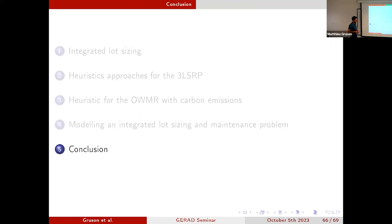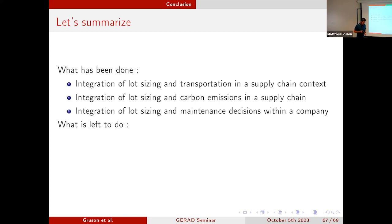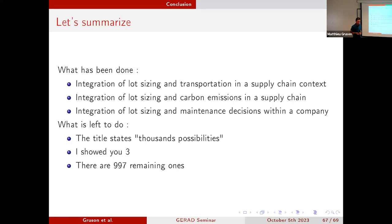As a conclusion, what I showed you in this seminar: integration of lot sizing and transportation decisions in a supply chain context; integration of lot sizing and carbon emissions still in a supply chain context; and integration of lot sizing and maintenance decisions within a company. What is left to do? In the title I mentioned thousands of possibilities — I showed you three, so we have 997 remaining possibilities to tackle.